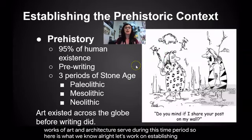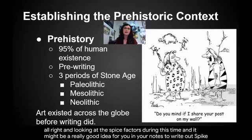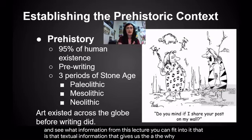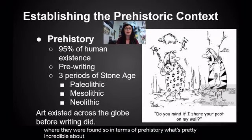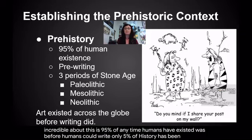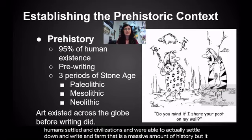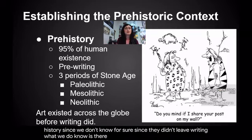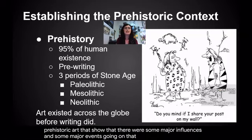Let's work on establishing this context and looking at the SPICE factors during this time. It might be a really good idea in your notes to write out SPICE and see what information from this lecture you can fit into it — that contextual information that gives us the why: why these works of art look the way they do, why they were created, why they are where they were found. What's pretty incredible about prehistory is that 95% of any time humans have existed was before humans could write. Only 5% of history has been since humans settled in civilizations and were able to farm and write. There are some distinct time periods in prehistoric art that show major influences and events that impacted the way the art looks.